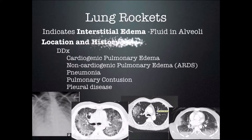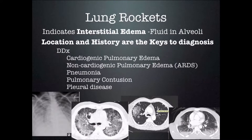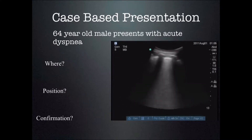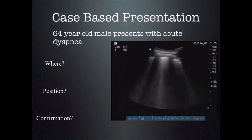The location and history are the keys to differentiate between these differential diagnoses. You have to know what the patient's current position is, where the probe is and where you found the artifacts, and what position they have been in for the last several hours to couple of days. So for our 64-year-old male presenting with acute shortness of breath — you want to know where is the probe and what position is this person in.